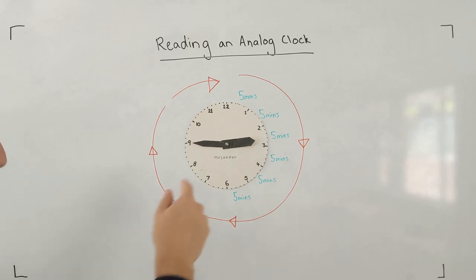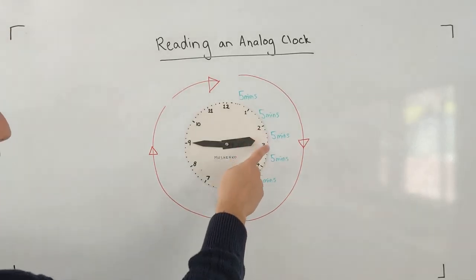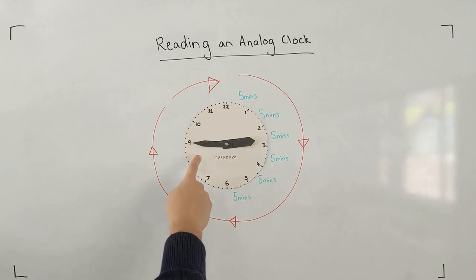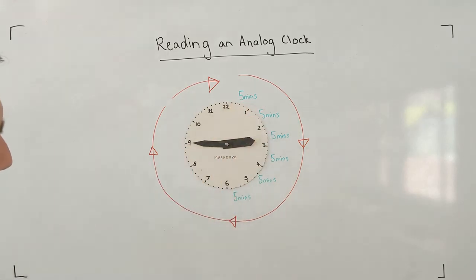It hasn't made it all the way to the 3. So it must be 2 something, but it's got to be almost 3 o'clock. 2 something. Let's have a look at the minute hand. The minute hand has, well, it's made most of its journey around. So it must be a pretty high number of minutes.